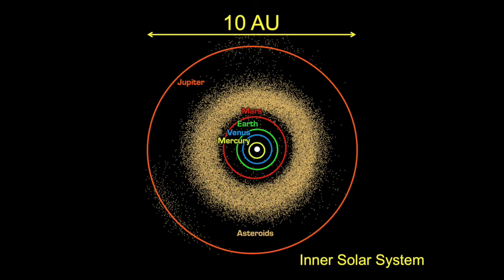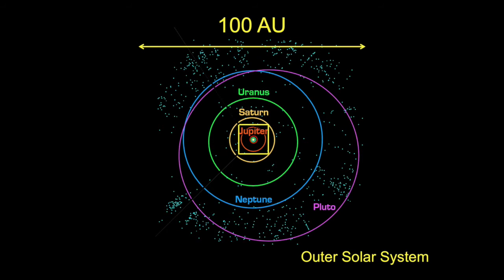Moving up a factor of ten from one AU, we go from the inner solar system — the orbit of the Earth — out to encompass the orbit of Jupiter. Jupiter's orbit is about 5.2 AU from the Sun, so a circle of diameter 10 AU would encompass Mercury, Venus, Earth, Mars, the asteroid belt, and Jupiter. Another factor of ten reaches the outer solar system, where we find Saturn, Uranus, Neptune, the dwarf planet Pluto at its outermost extent, and numerous small objects of the Kuiper belt.